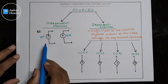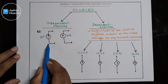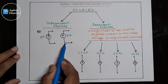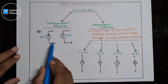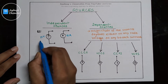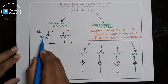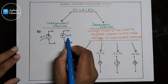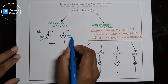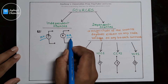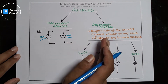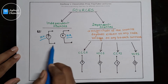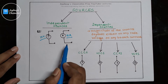For example, this is the ideal voltage source and this is the ideal current source. The magnitude of this source is 10 volts — a constant value that doesn't depend on any other parameters. The magnitude of this current source is 10 amps — also a constant value that doesn't depend on any other circuit parameters. This is why we call these independent sources.